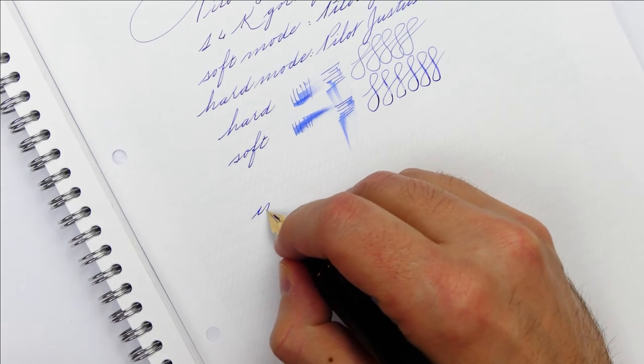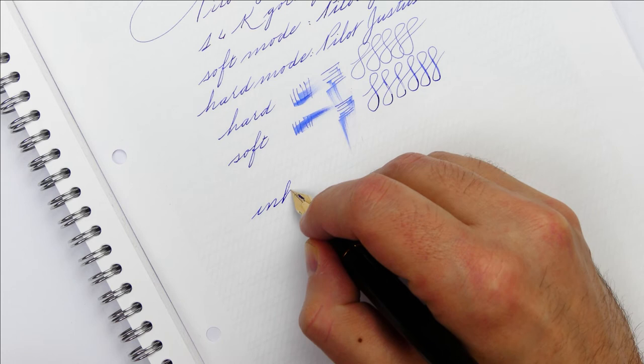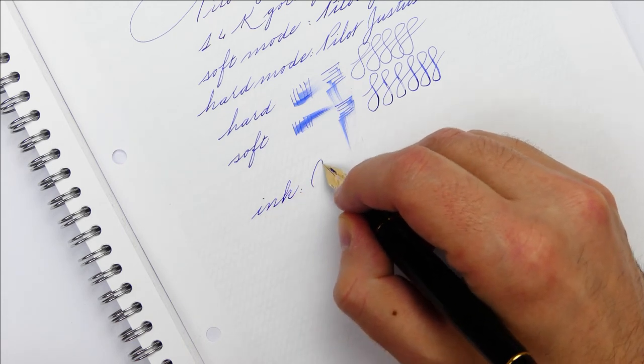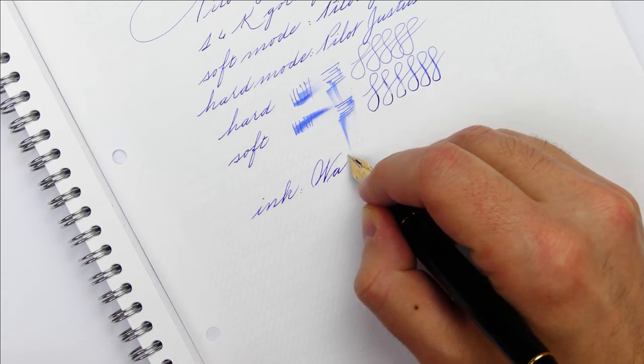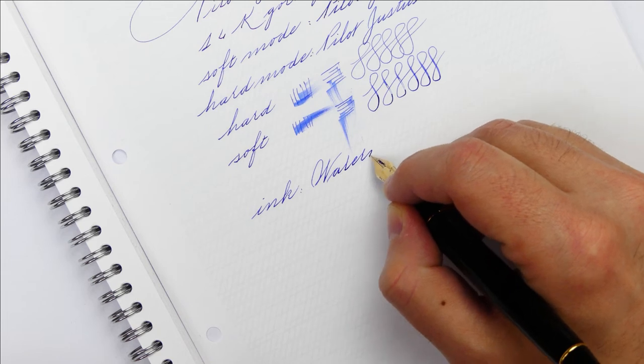As always, for all my writing samples I use the Waterman blue to get a consistent comparison between the nibs to see if they are dry or wet.